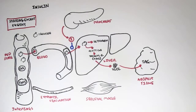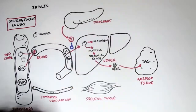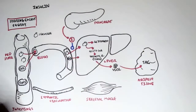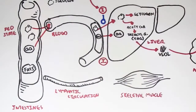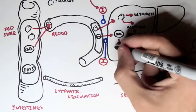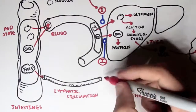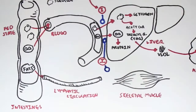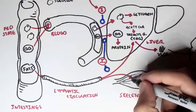Insulin also has an effect on amino acids. Amino acids will be absorbed by the blood, and insulin will promote their uptake into the liver, then promote proteogenesis — therefore promoting protein synthesis. Insulin also has effects on fats, but fats are absorbed through the lymphatic circulation, not through the blood. Insulin will promote the storage of fats within skeletal muscle as fatty acids.